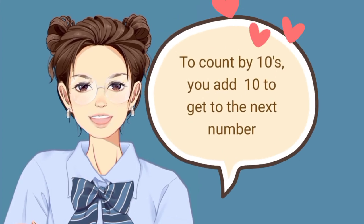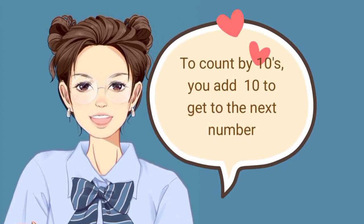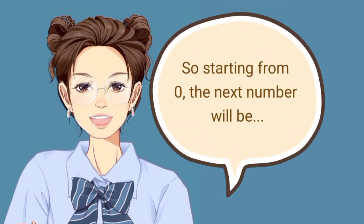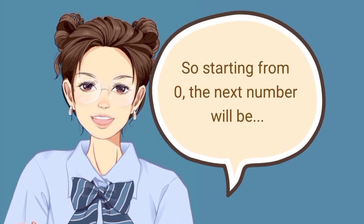To count by 10s, you add 10 to get to the next number. Starting from 0, the next number will be 0 plus 10 is 10.